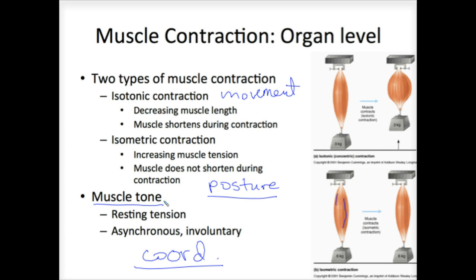Somebody that seems to have muscles — that's literally what you're seeing — is this resting tension, this constant contraction. That's why if you have a higher body mass index associated with muscle mass, you tend to burn more calories sitting still than somebody who has lower muscle mass sitting there. Because your muscles are actually contracting while you sit, that's why you burn more energy.